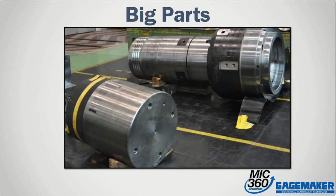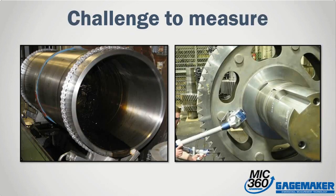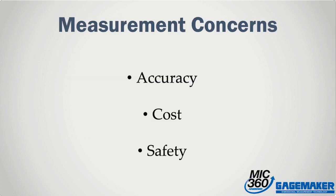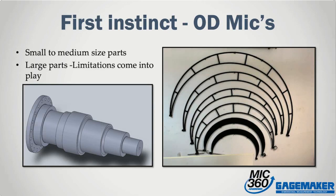Selecting the right precision measuring equipment for big parts can be very challenging. Common methods include large OD and ID micrometers, pie tapes, probes, and other sophisticated instruments like articulating measuring arms and complex laser systems. When presented with an opportunity to machine and inspect a large diameter part, immediate concerns come to mind. Accuracy, cost, and safety are always at the forefront. For medium-sized parts, the go-to instrument may seem obvious — OD mics. However, when the part gets larger and larger, all the benefits you expect from using a standard OD mic are quickly overcome by its limitations.